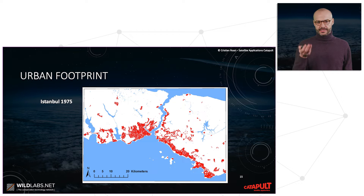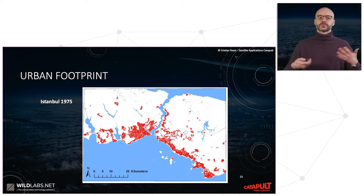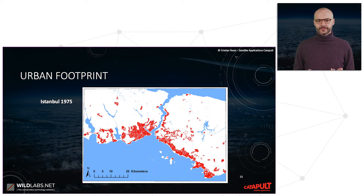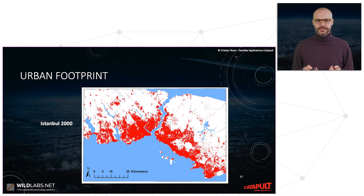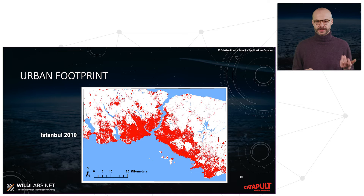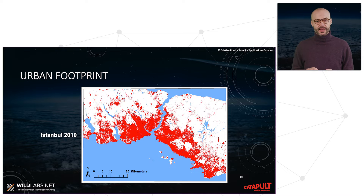We see Istanbul in Turkey at different time periods and can study how the city evolved through time: 1975, 1990, 2000, and 2010. We see how the city basically expands through the Bosphorus area.